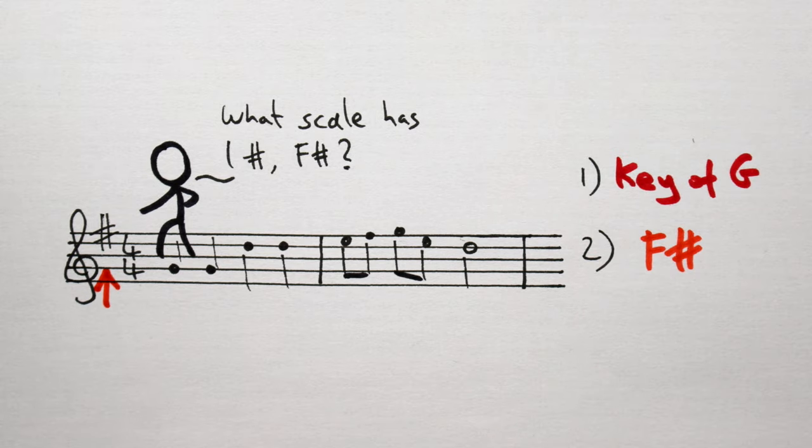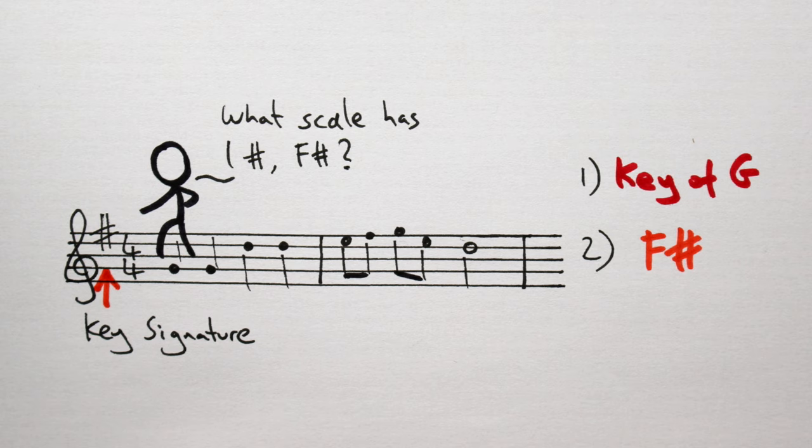Having the F sharp at the beginning also tells us that every time we see F, unless otherwise indicated, we should play an F sharp instead.